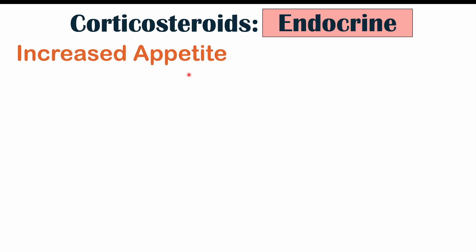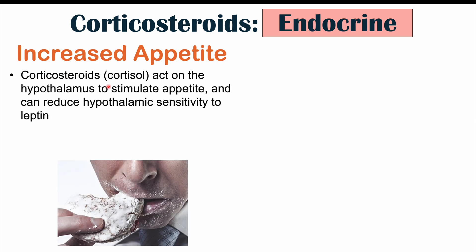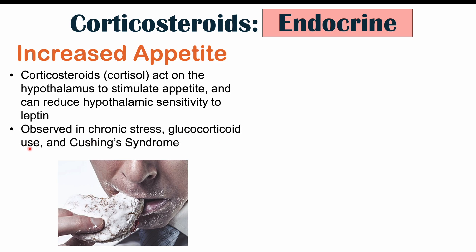Moving on to the endocrine system, we can see issues with increased appetite with systemic corticosteroid use. Corticosteroids and our own endogenous cortisol act on the hypothalamus in the brain to stimulate appetite. This can also reduce hypothalamic sensitivity to leptin — a hormone our fat cells release to promote satiety, to make us feel full. So it makes you feel more hungry and also suppresses the hormone that should suppress your appetite. We can see these appetite changes with high cortisol levels in chronic stress, glucocorticoid use, and Cushing's syndrome and Cushing's disease.